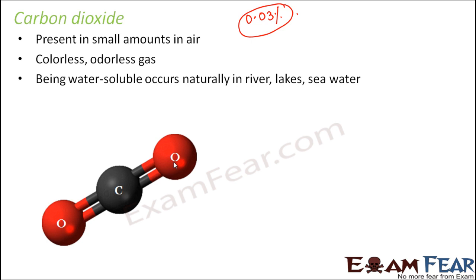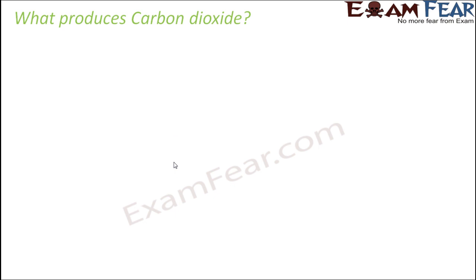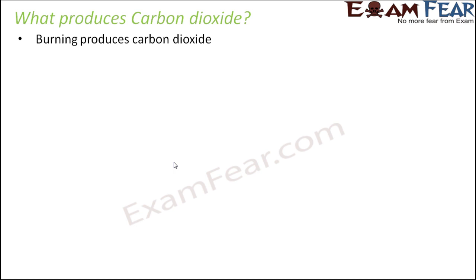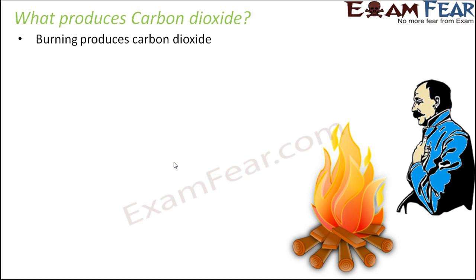Since it is soluble in water, it is present in all water bodies by default. Now, how do we get carbon dioxide in the atmosphere? One such process is burning. For burning to take place, oxygen is needed — oxygen is like a requirement for burning. When the burning process takes place, carbon dioxide is produced as a result.